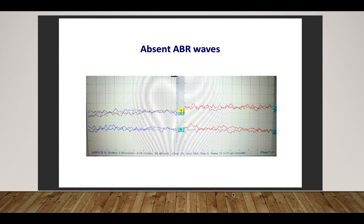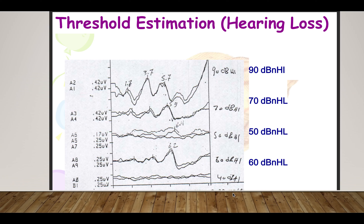In that case, we need to perform otoacoustic emissions, MRI to assess the integrity of the cochlea, and cochlear microphonics by ECOG. For threshold estimation in hearing loss, identifiable and repeatable ABR waves could be traced down to 60 dB nHL, reflecting moderate hearing loss in the frequency range 2 to 4 kHz.